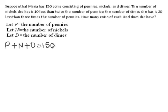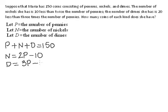They're also telling us that the number of nickels she has equals 10 less than twice the number of pennies, so N equals 2P minus 10. And the number of dimes she has equals 20 less than 3 times the number of pennies, so D equals 3P minus 20.